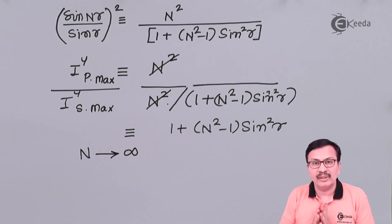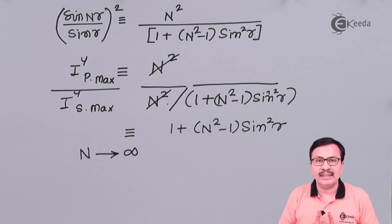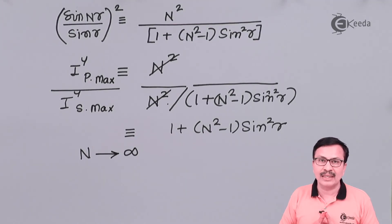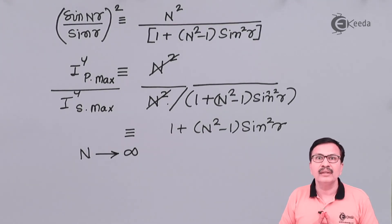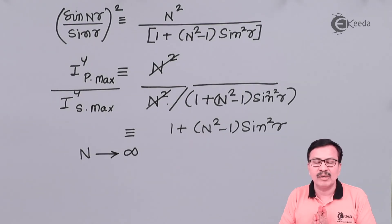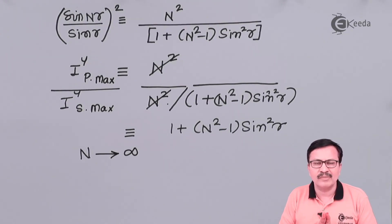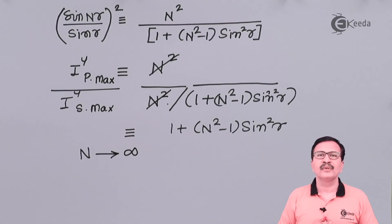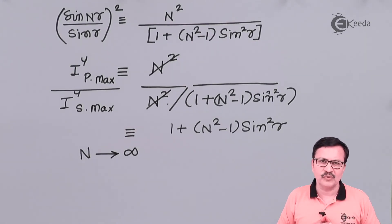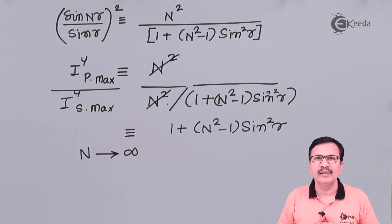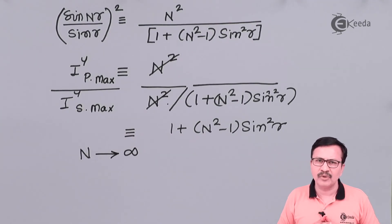Hence, for a diffraction grating, which at times has around 15,000 lines per inch, the intensity of the secondary maxima will not be of importance and it is only the intensities of the principal maxima that will be important. Thank you students for watching this particular video — stay tuned to our channel eKIDA and do subscribe. Thanks a lot.